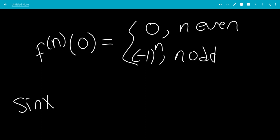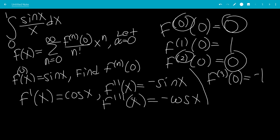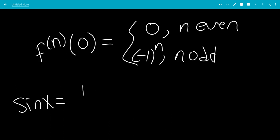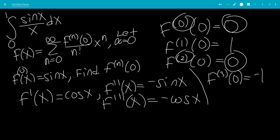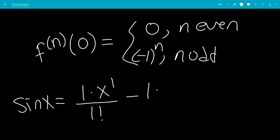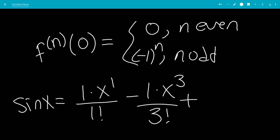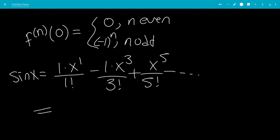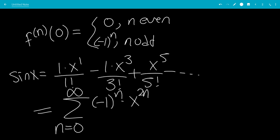So we're going to write sine x. We're not going to write the even parts, just the odd parts. At n equals 1, we have the first derivative at 0, which is 1, times x to the 1 over 1 factorial. Then the third derivative at 0, which is negative 1, times x cubed over 3 factorial. Continuing: x to the 5th over 5 factorial, and so on. This can be written as the sum from n goes from 0 to infinity of negative 1 to the n times x to the 2n plus 1 over (2n plus 1) factorial.